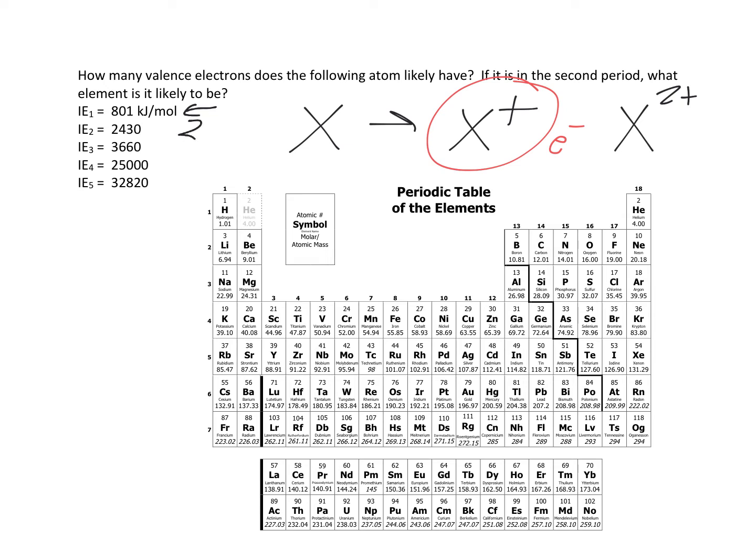So every successive ionization energy gets higher, but that's only half the story. The other half is there's a point where there's a big jump usually. And so let's look at this. So here, how much energy does it take to lose the first one, 801, then 2430, then 3660, then 25,000. There's a huge jump after the third. And why is that?